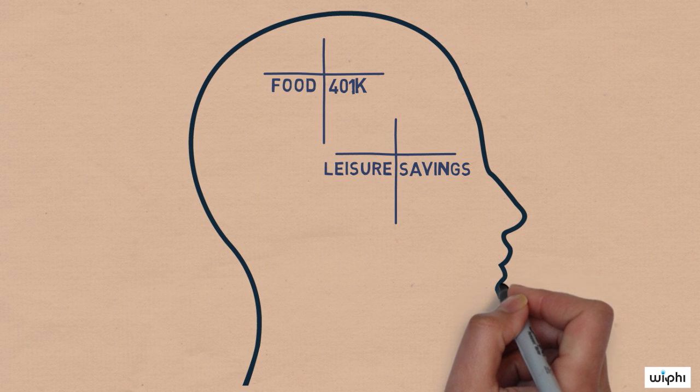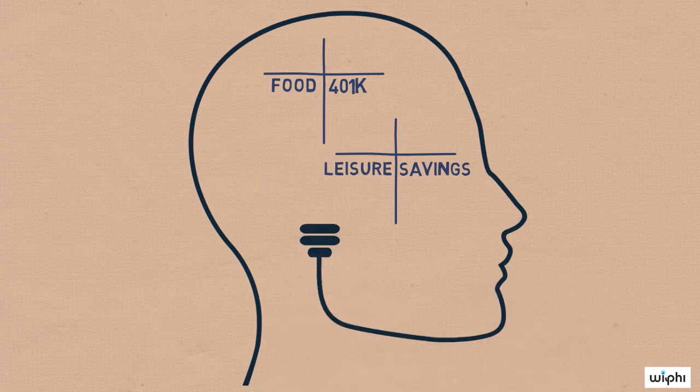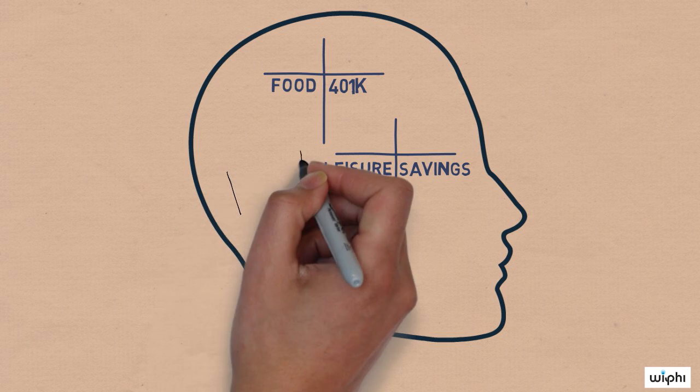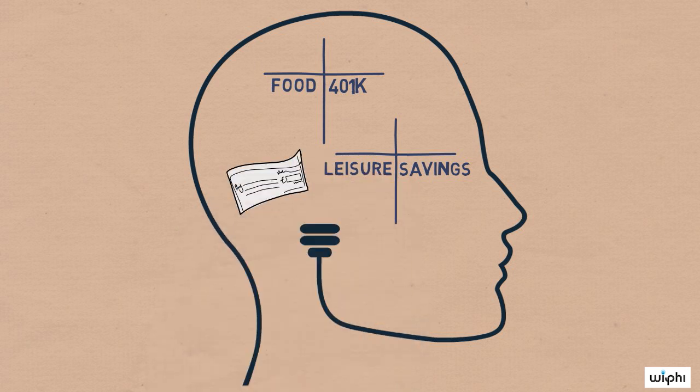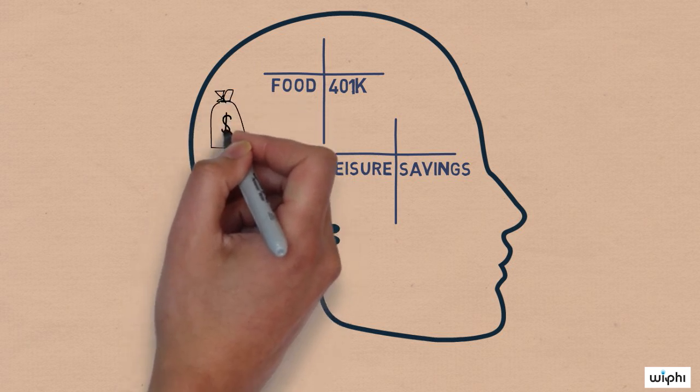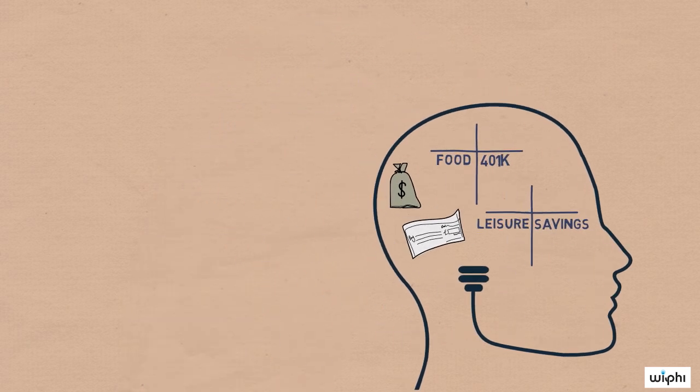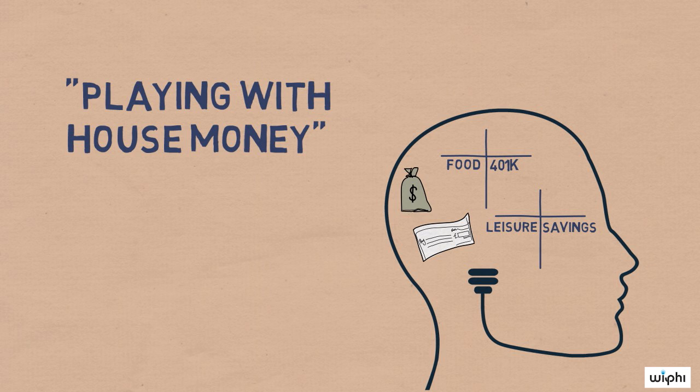In our head, we automatically set up different accounts for different stuff, and if we end up with extra money we didn't expect, say from a windfall in a tax return, or even from an unexpected coupon, we end up blowing that money in this new extra account. It's why gamblers gamble a lot more when they're playing with house money.